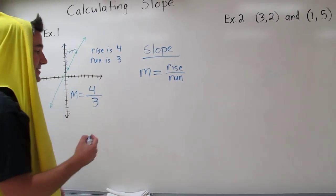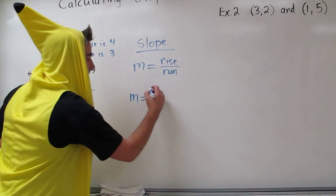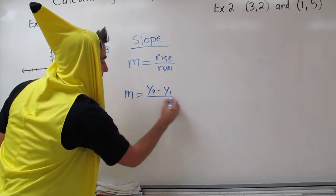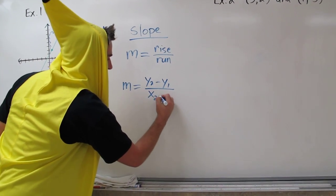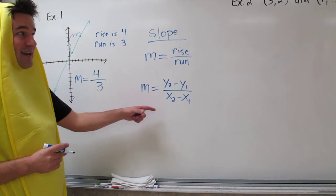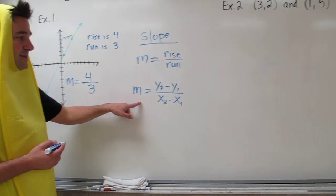Another way to calculate slope is using this formula. Slope equals y sub 2 minus y sub 1 all over x sub 2 minus x sub 1. This may look very complicated, but it's not that bad. Let's look at an example calculating slope this way.